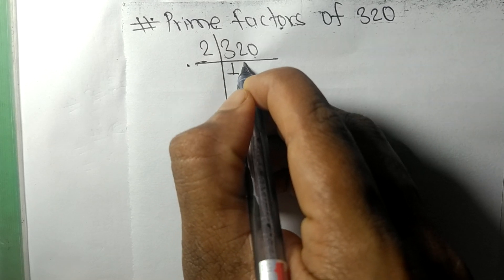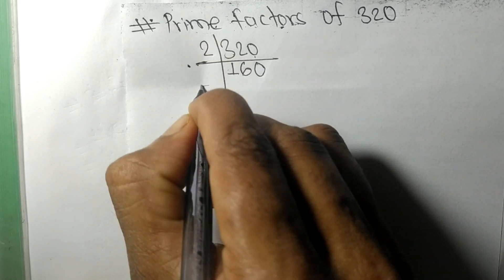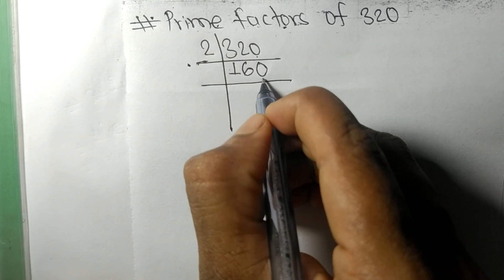2 times 6 is 12 and 2 times 0 is 0. So again it has 0 at the last, so it is divisible by 2.